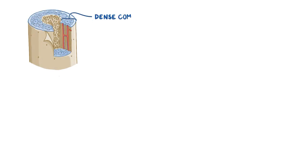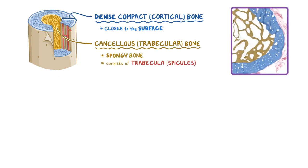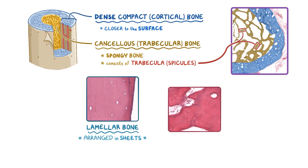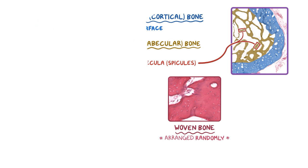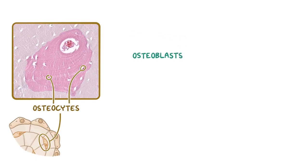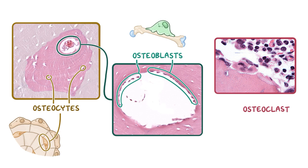As a quick recap, morphologically, bones have two main types: the denser compact, or cortical bone, found closer to the surface, and the cancellous, or trabecular bone, which is the spongy bone that consists of trabecula or spicules forming interconnecting cavities. Microscopically, lamellar bone is arranged in sheets of collagen matrix, and woven bone has collagen fibers arranged randomly. There are also three main cell types: osteocytes, found in lacunae between the layers of collagen matrix; osteoblasts, found along the surface of bones and lining the Haversian canal; and osteoclasts, large multinucleated cells found on the surface of the bone matrix.